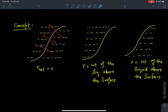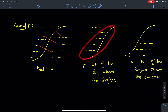In the second case, when liquid is present only above the surface, the surface balances that liquid. So directly we can say the force applied by the liquid on the surface is nothing but the weight of the liquid above the surface, because the surface is balancing this weight. Therefore, the force applied by the liquid equals the weight of the liquid above the surface.